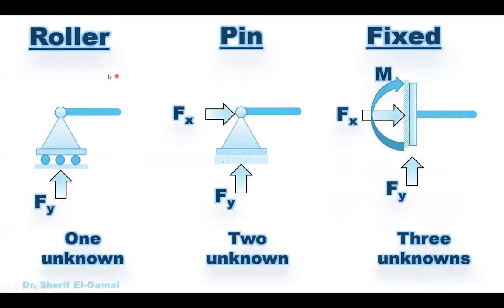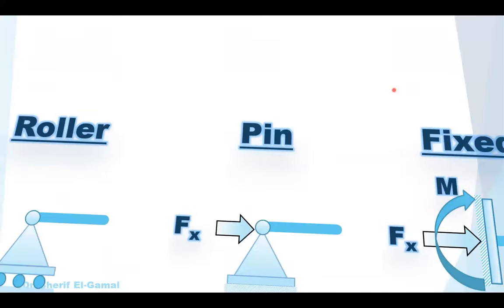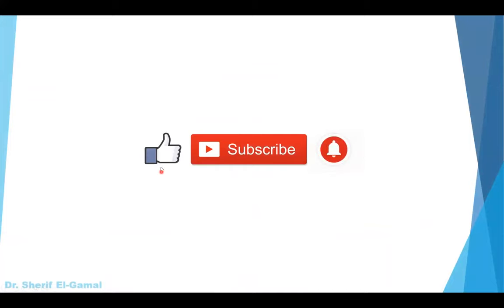To conclude this video: we have the roller support and similar supports, all with only one unknown — FY — always perpendicular to the supporting surface. For the pin support we have two unknowns: FX and FY. For the fixed support we have three unknowns: FX, FY, and the moment. Thank you for watching — if you like the video please click like, subscribe, and click the bell. See you in coming videos where we will use this information to determine reactions and draw the shear and moment diagrams for different structures.